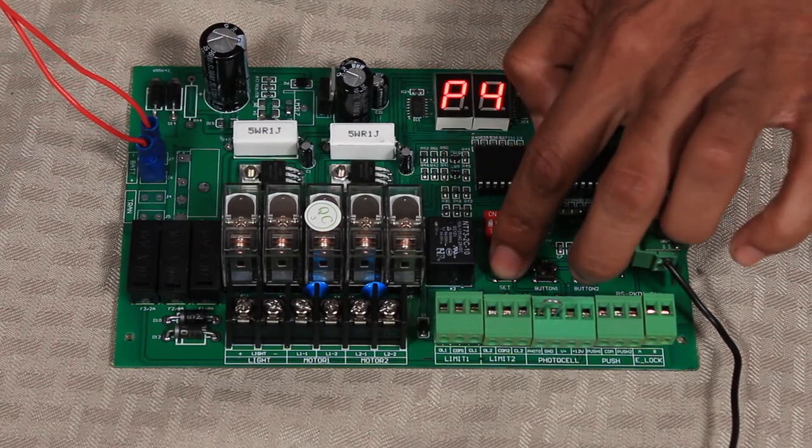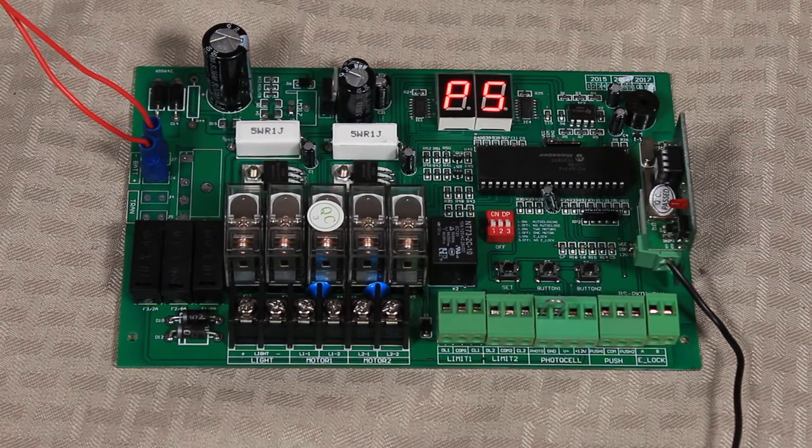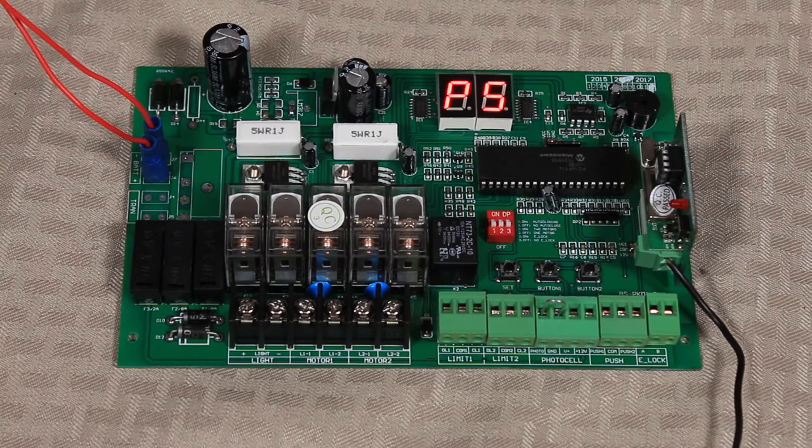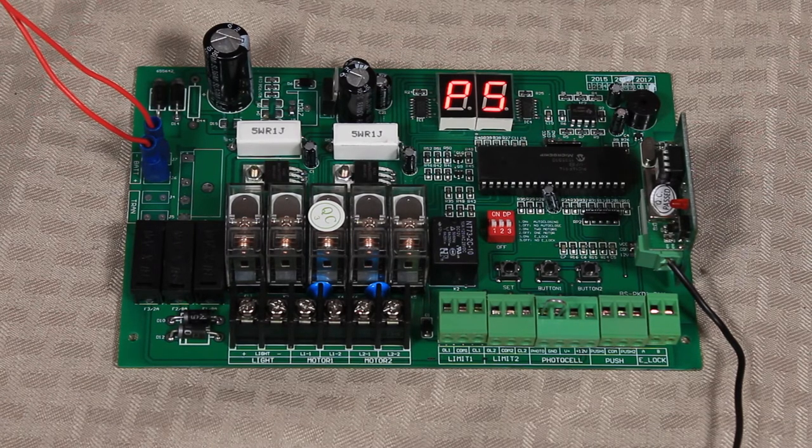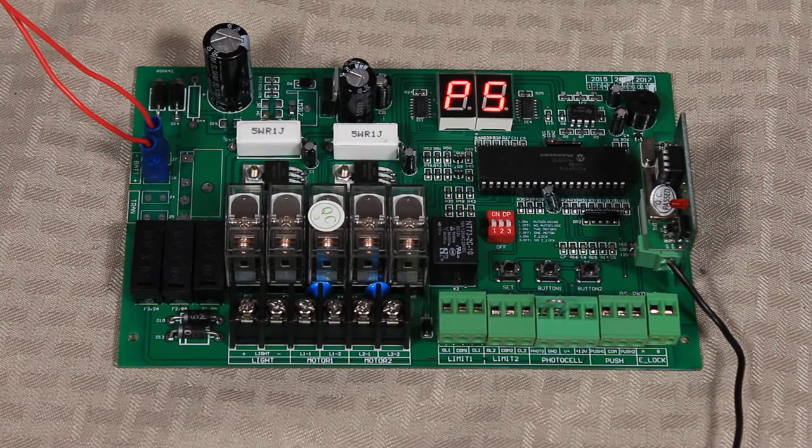All right, we're going to go to P5 here. P5 is the release time for the lock. What that means is if you're using a gate lock and you have that third dip switch up, when the gate goes to open after clicking the remote or using an accessory, whichever it may be,